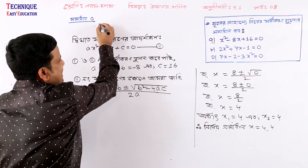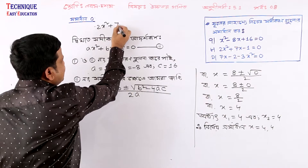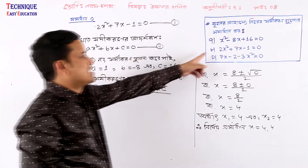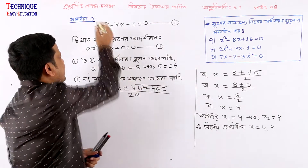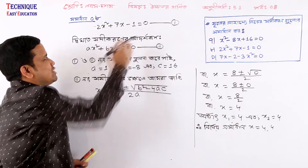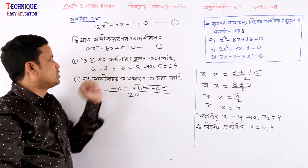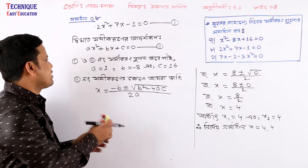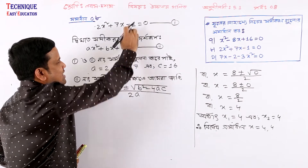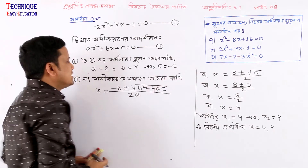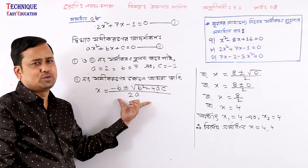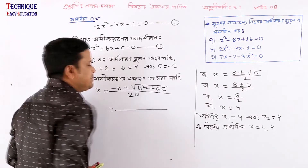Now if I say 2x squared plus 7x minus 1 equal to zero. This is equal to 0.